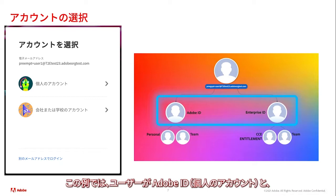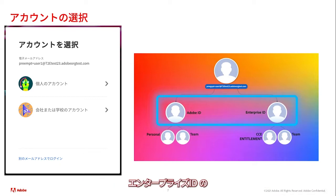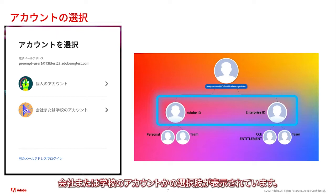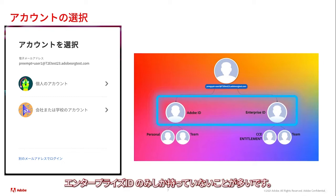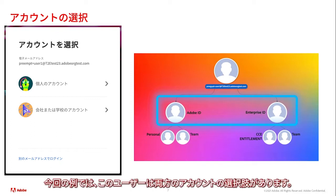In our example, since the user has both an Adobe ID as well as an Enterprise ID, they are presented a choice to select either personal account or company or school account. Note that many Adobe customers may only have an Adobe ID or an Enterprise ID. Only in specific instances, such as in today's example, would a user see both account options.